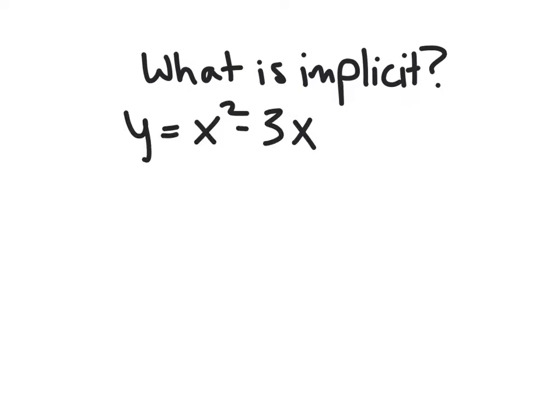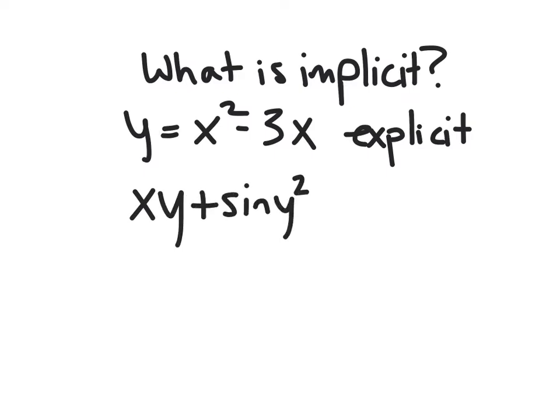Thus far, we have dealt with explicit functions like this one, where we can write y equals stuff just in terms of x. But, you could have something like xy plus sine of y squared equals 3, for instance. And here you would not be able to get y by itself and solve for y just in terms of x.